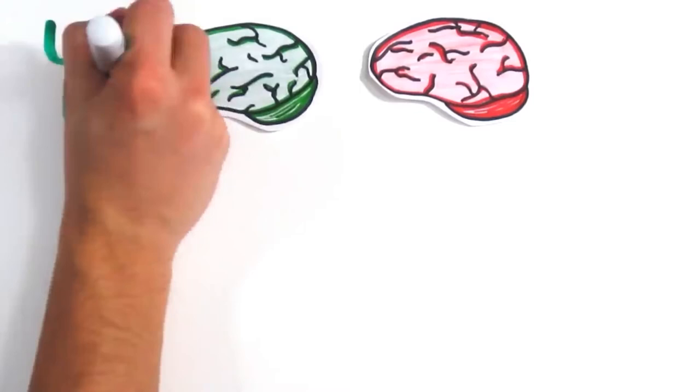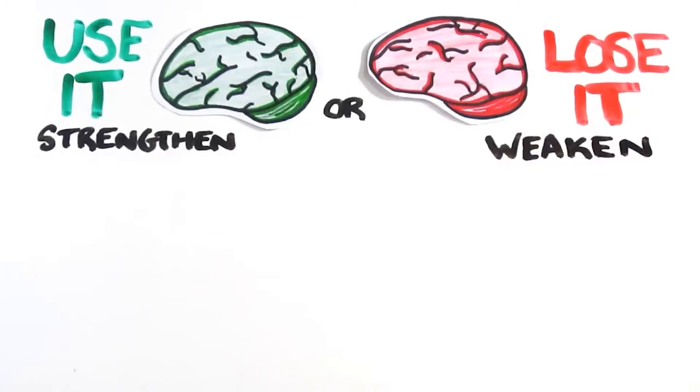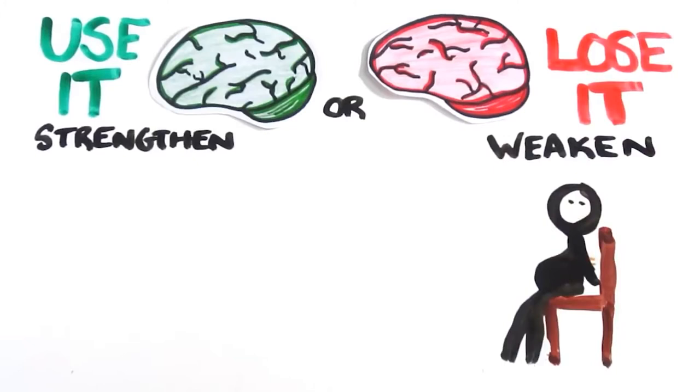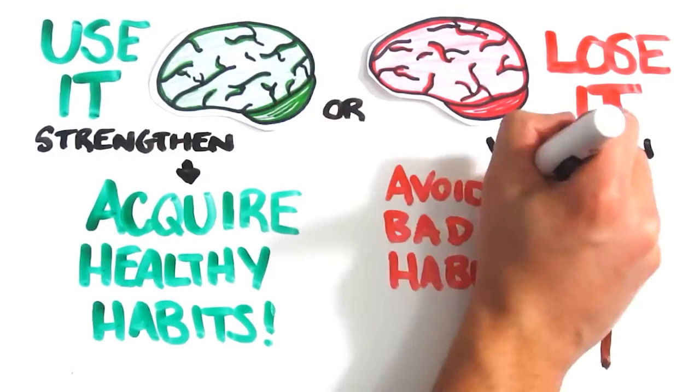The brain is often described as a use it or lose it system, because the neural connections you stimulate grow stronger and desire to be activated, while the ones you ignore become weakened. Much like your muscles, which if sitting still all day, itch for activity, but after prolonged non-use, they become complacent. Luckily, the same neuroplastic system that proliferates these habits can also be used to acquire healthier ones.